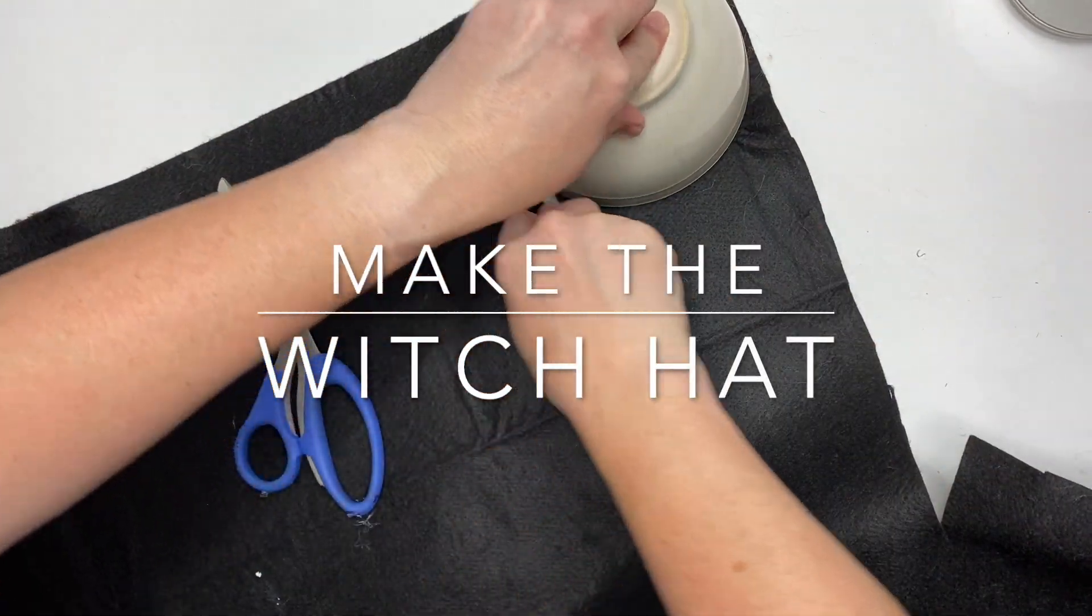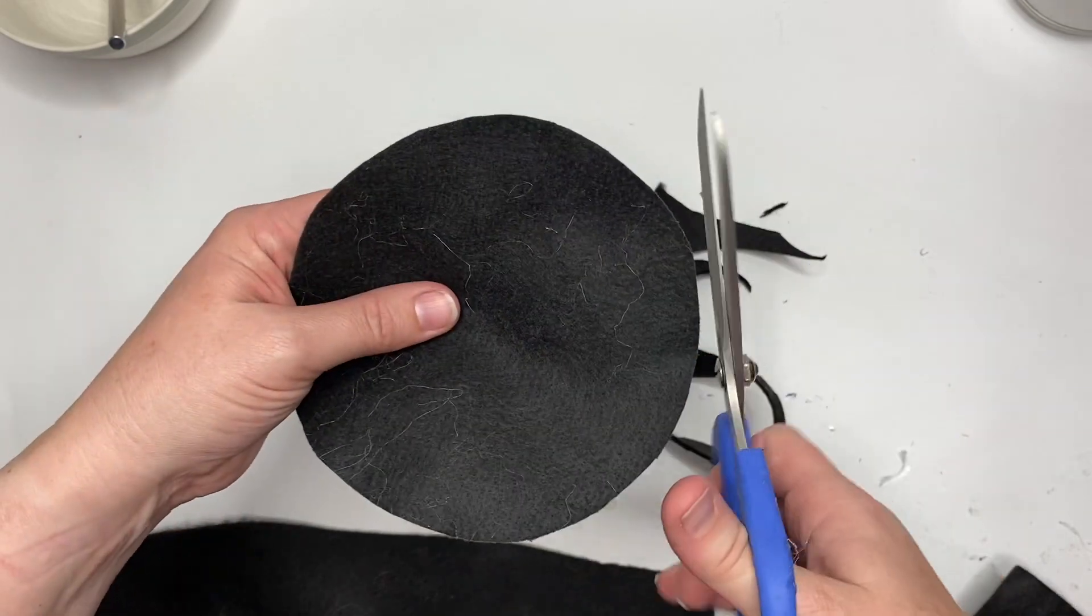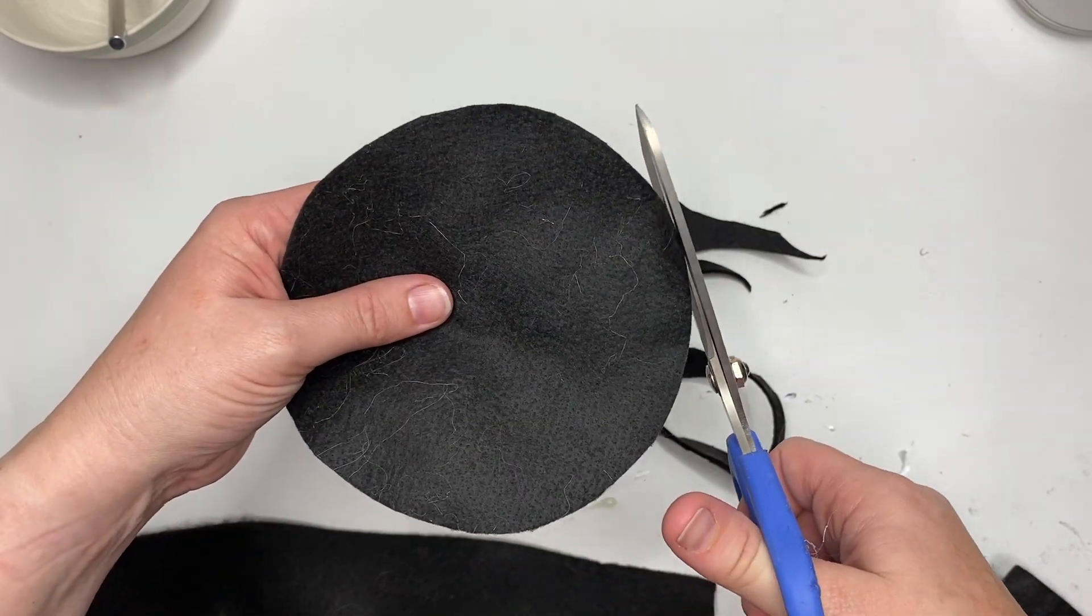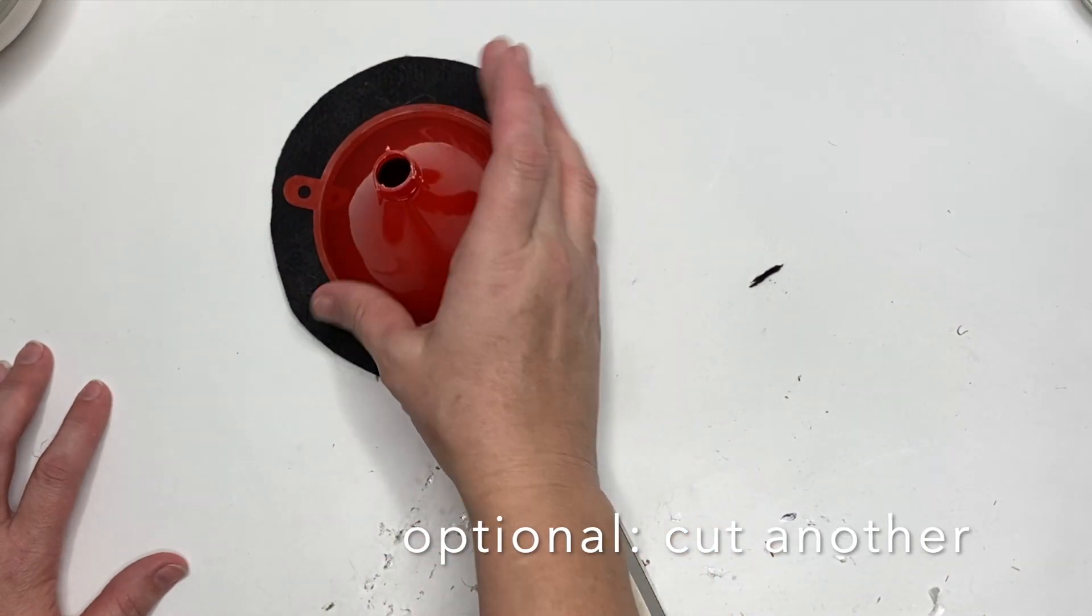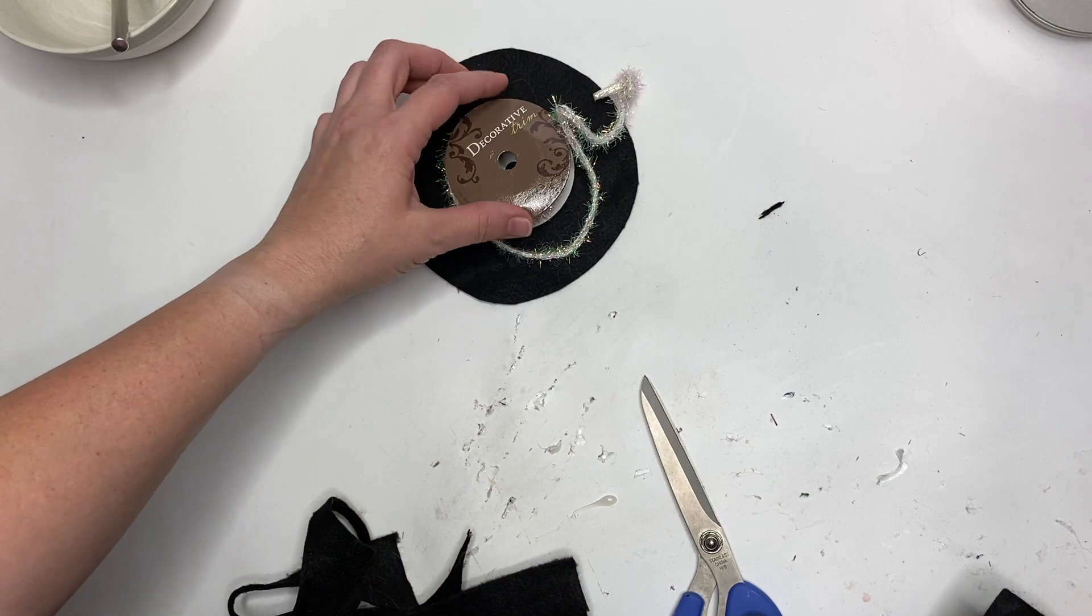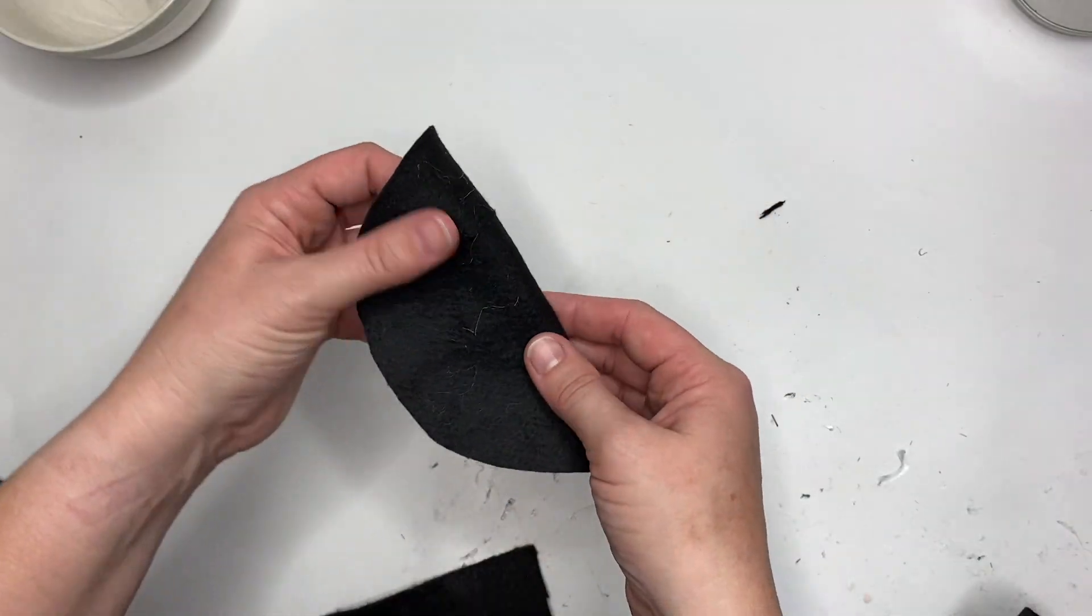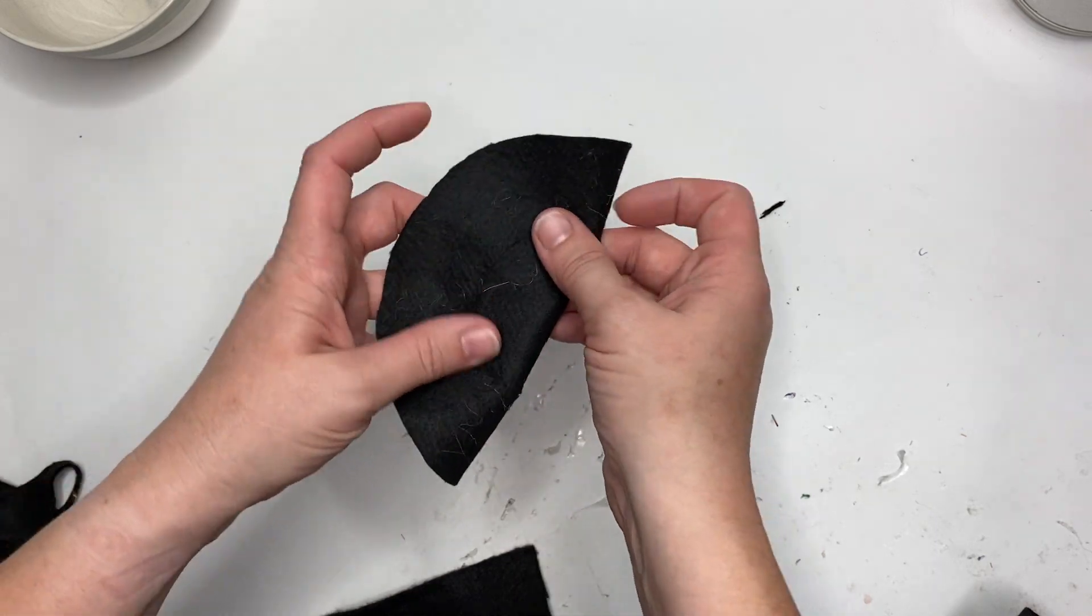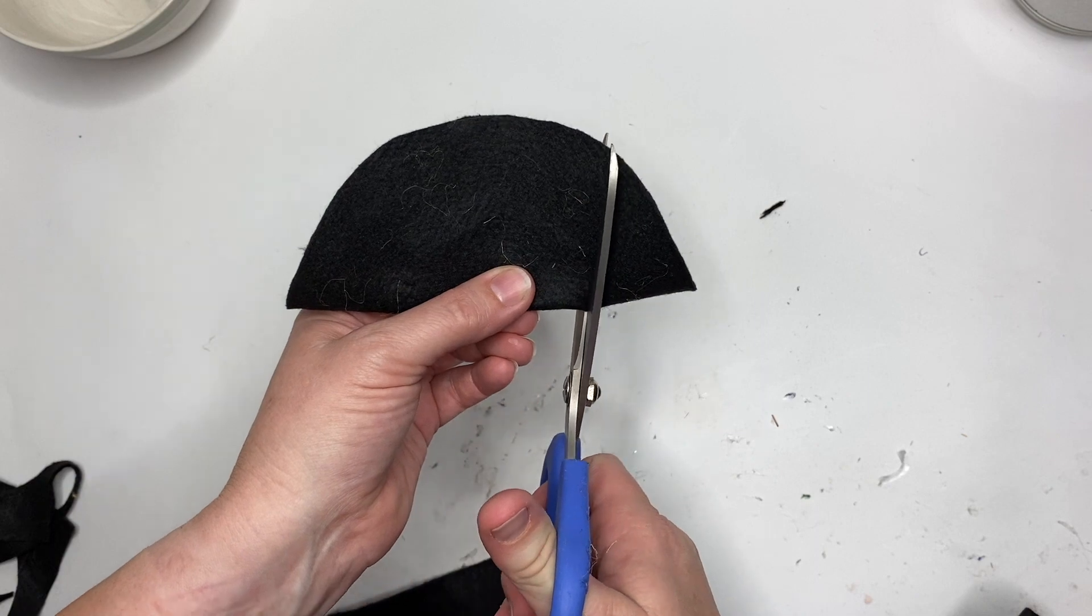Now we're gonna make the witch hat. If you have black stiff felt, use that. I have this premium felt that I have to use, so I'm just using a bowl to cut a round circle. You can actually cut two of those circles. We're gonna cut out a center—I'm using the size of a ribbon spool.